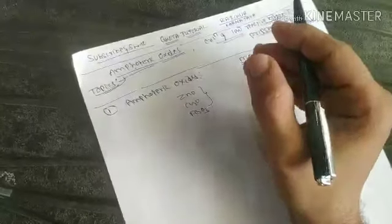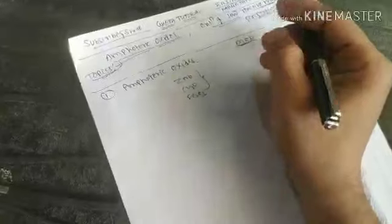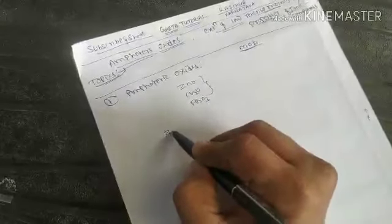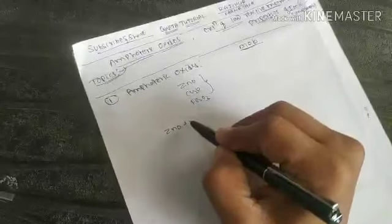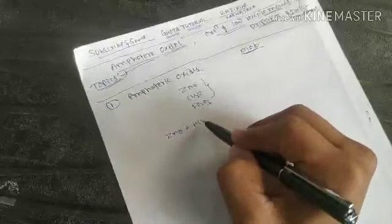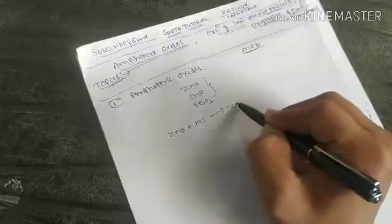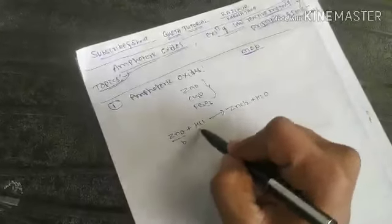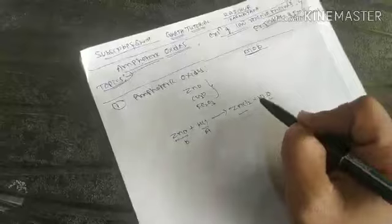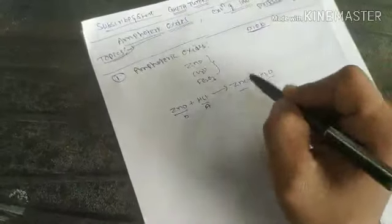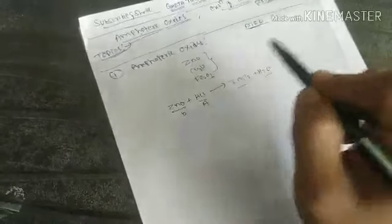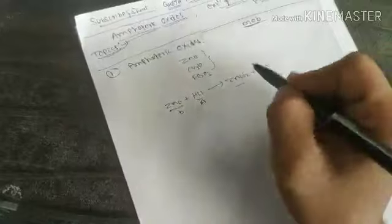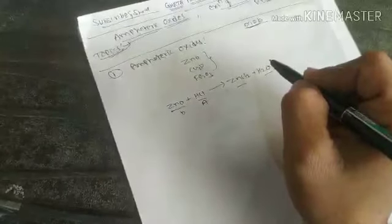These special metallic oxides react with both acid and base to form salt and water. All metallic oxides react with acid to form salt and water — that is the neutralization reaction. But those metallic oxides which also react with base to form salt and water are called amphoteric oxides.